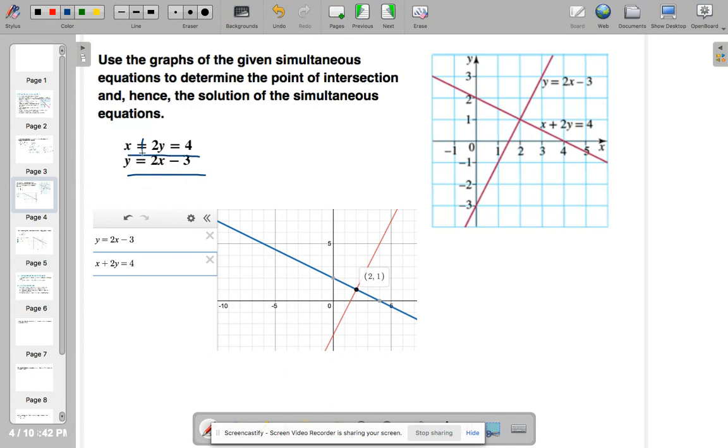And then I've got the intersection point, which is 2 comma 1. So the point which satisfies both those equations is 2 comma 1. So if on a graphing calculator like Desmos and they're available on your computer, just Google Desmos graphing calculator, you can draw them up and find that intersection point.